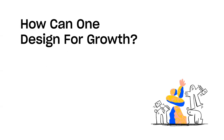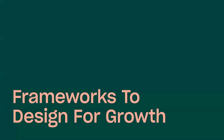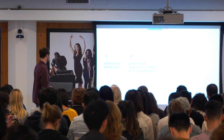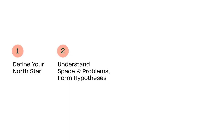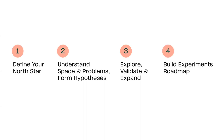So how can one design for growth? I'm going to walk through some frameworks. Number one, define your North Star — we'll see how to have direction when designing for growth. Number two, understand the space and problems to form solid hypotheses. Number three, explore in a lean manner to validate those hypotheses, then expand and extract more value. And number four, build an experiments roadmap — how to be more thoughtful when building out your roadmap of experiments.